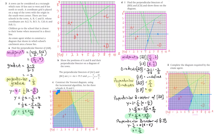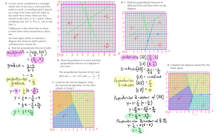Construct the Voronoi diagram using the incremental algorithm for the three schools A, B and C. We're ignoring D for now and just using these three perpendicular bisectors. Everything on this side of the AB line is B, but only up to the BC line, so we can fill in along here — that's all B. A is everything above the AB line up to the AC line. C is everything to the right of the AC line and the BC line, meeting there, and that's shown here.